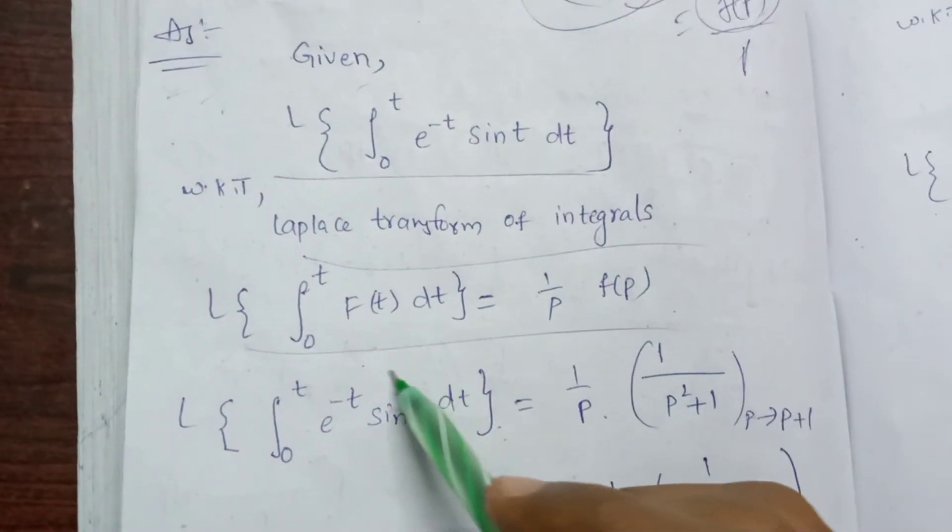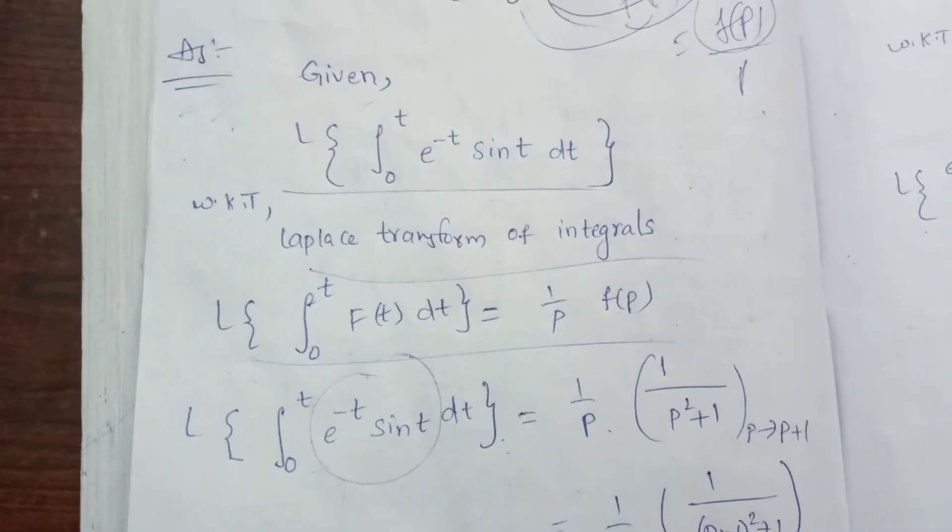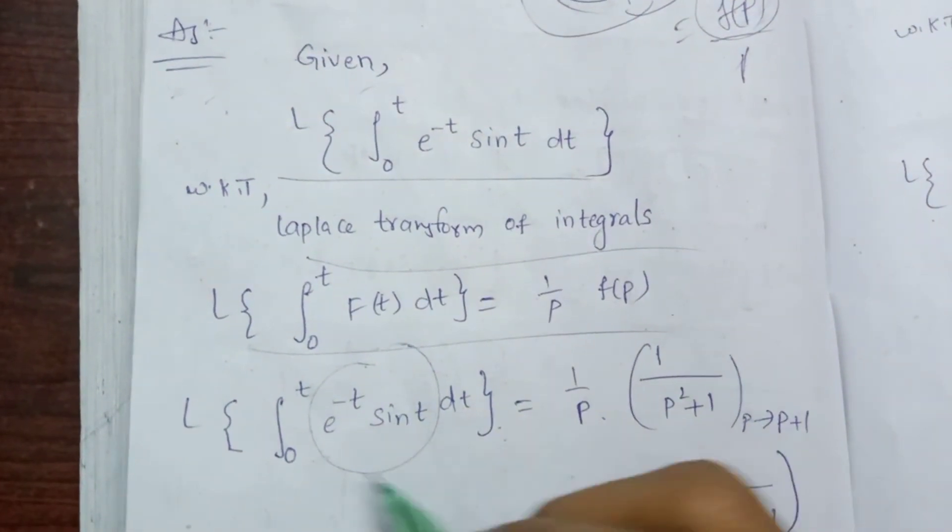We have 1 by p multiplied by f of p, where f of p is the Laplace transform of e power minus t sin t. We apply first shifting here.